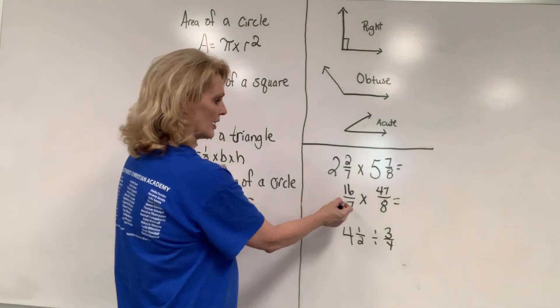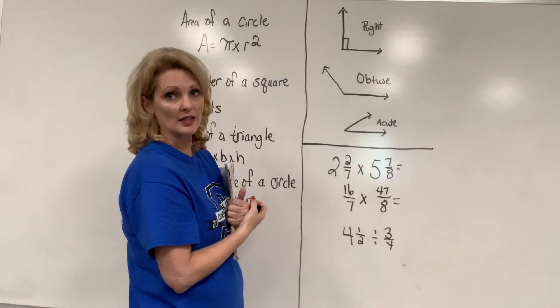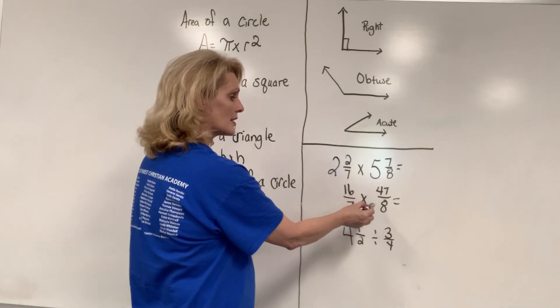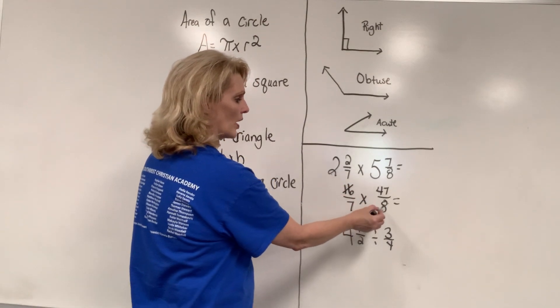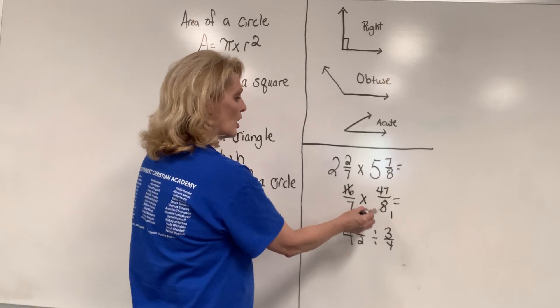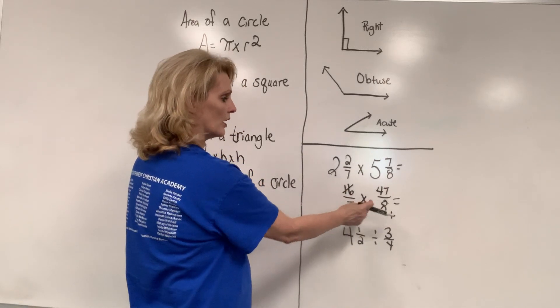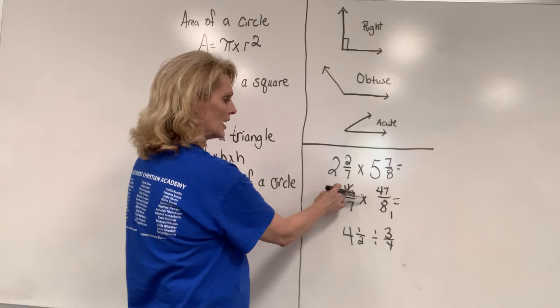So you cannot say 7 into 47. That doesn't work. But you can say 16 and 8. So 8 will go into 8 1 time, 8 will go into 16, 2 times.